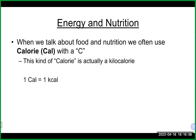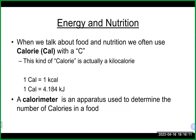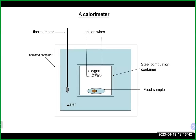One nutritional calorie (capital C) is actually 1,000 of the small calories — also called a kilocalorie. Typically on nutrition labels, we use the nutritional calorie. A calorimeter — like a coffee cup calorimeter — can determine how much energy or calories are in food.